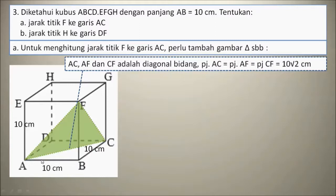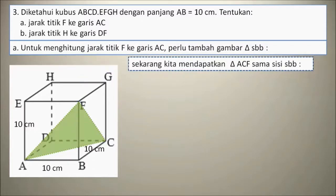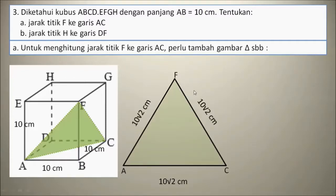Panjang AC sama dengan panjang AF sama dengan panjang CF, yaitu 10 akar 2 cm. Ingat rumusnya ya, sekarang kita mendapatkan segitiga ACF, yaitu segitiga sama sisi. ACF adalah segitiga sama sisi, dengan panjang sisinya adalah 10 akar 2 cm.